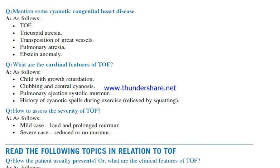What are the cardinal features of tetralogy of Fallot? A child with growth retardation, clubbing, and central cyanosis; pulmonary ejection systolic murmur; history of cyanotic spells during exercise, relieved by squatting. How to assess severity: in a mild case, there is a loud and prolonged murmur; in a severe case, the murmur is reduced or absent.